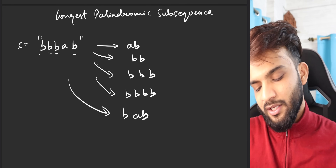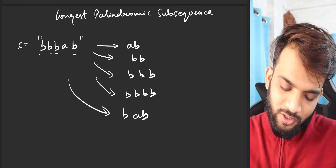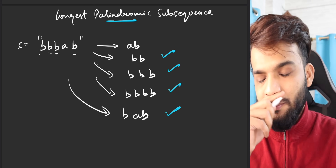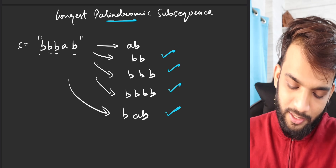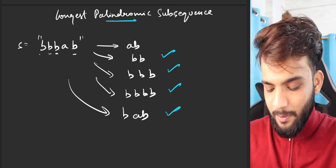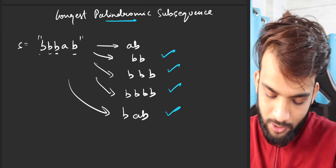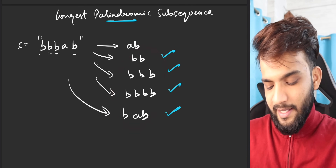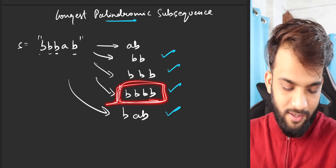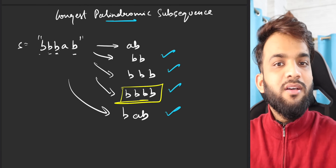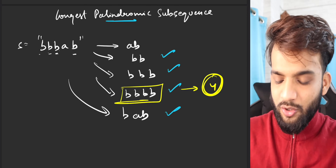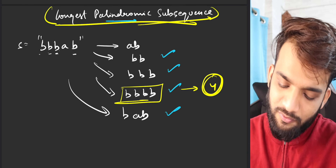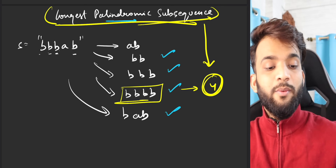Among all these subsequences, we need to find which ones are palindromes. A palindrome is a string that reads the same forwards and backwards — for example, 'BBB' reversed is still 'BBB'. Among all palindromic subsequences, we want the longest one. For the string 'BBAB', the longest palindromic subsequence has length 4, and that is our answer.